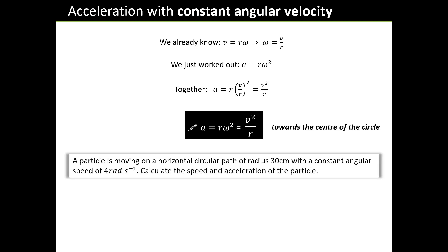Let's do a quick example to convince ourselves we know what's going on. A particle is moving on a horizontal circular path of radius 30 centimeters, that's 0.3 meters, with constant angular speed of 4 rads per second. Calculate the speed and acceleration of the particle. Notice I do mean speed here, because the velocity is constantly changing as the direction's constantly changing. Well the first bit's easy. v, the tangential velocity or speed, is just rω, which is 1.2 meters per second tangentially. And a is rω², 4.8 meters per second squared, towards the center of the circle.